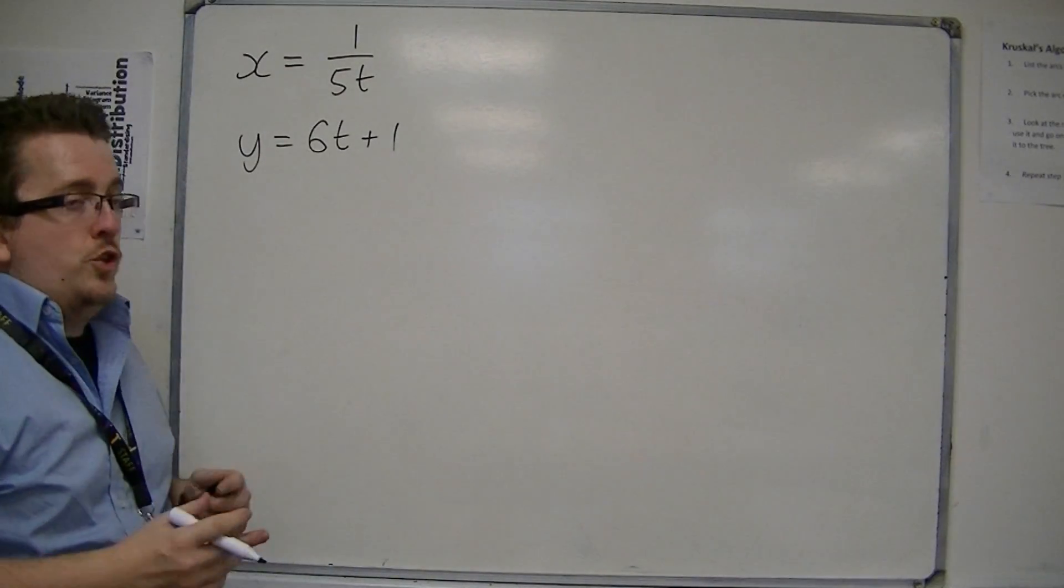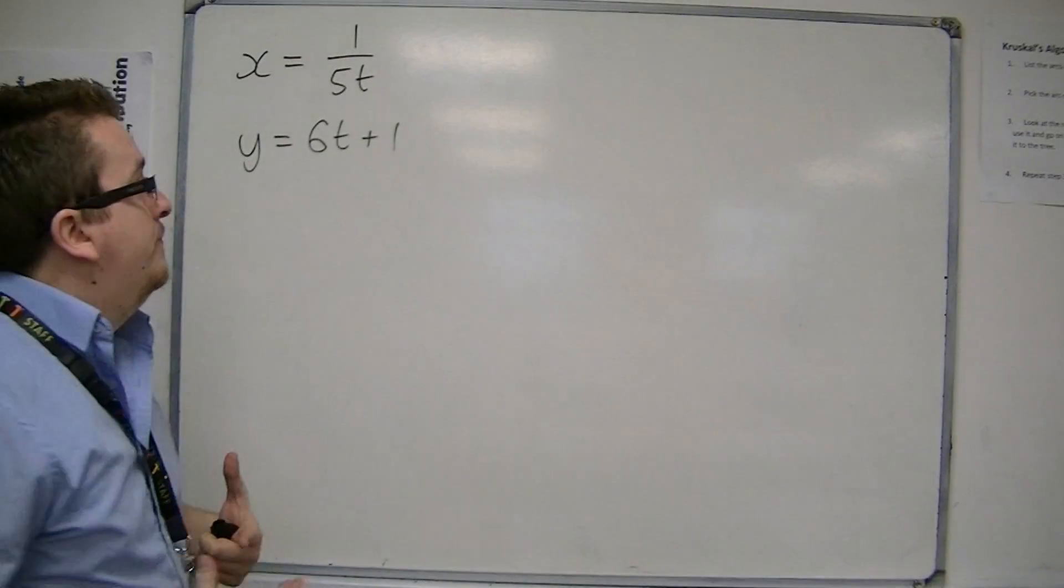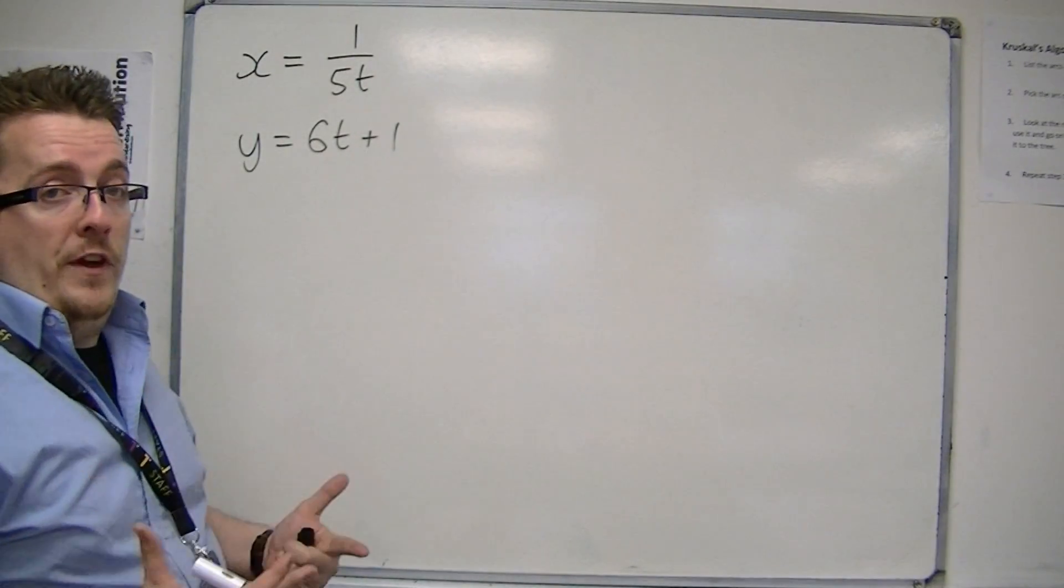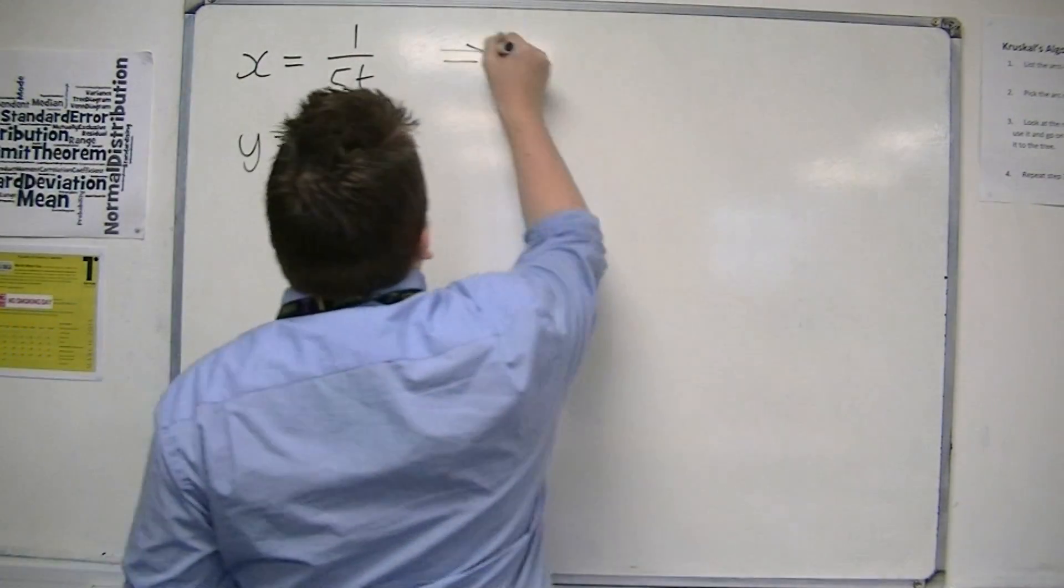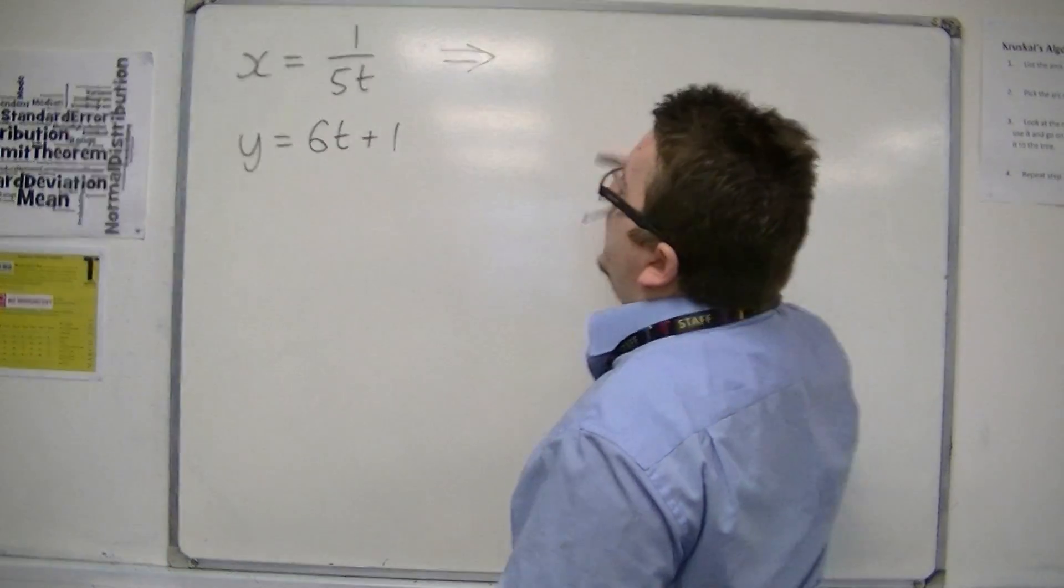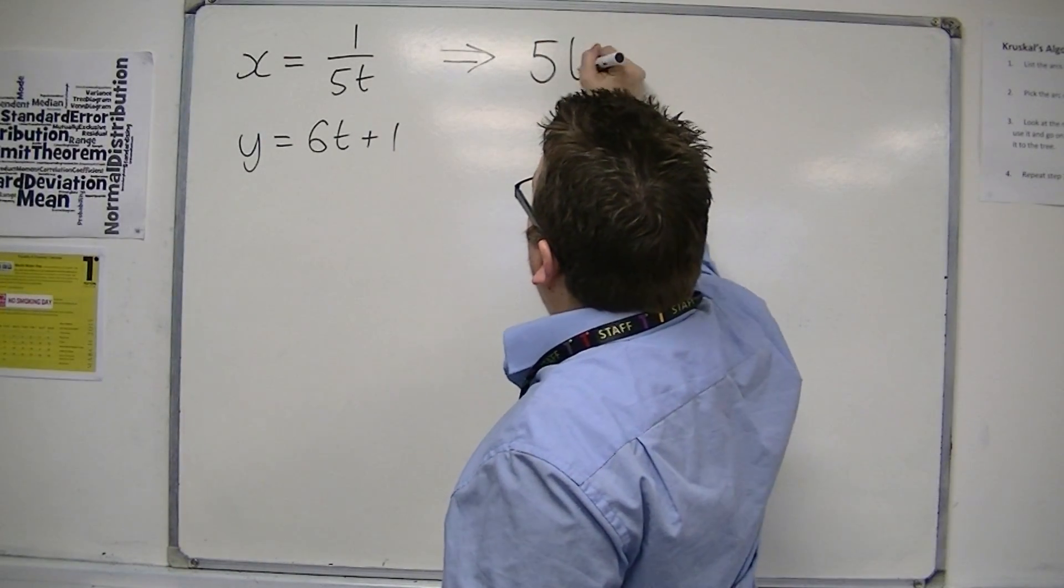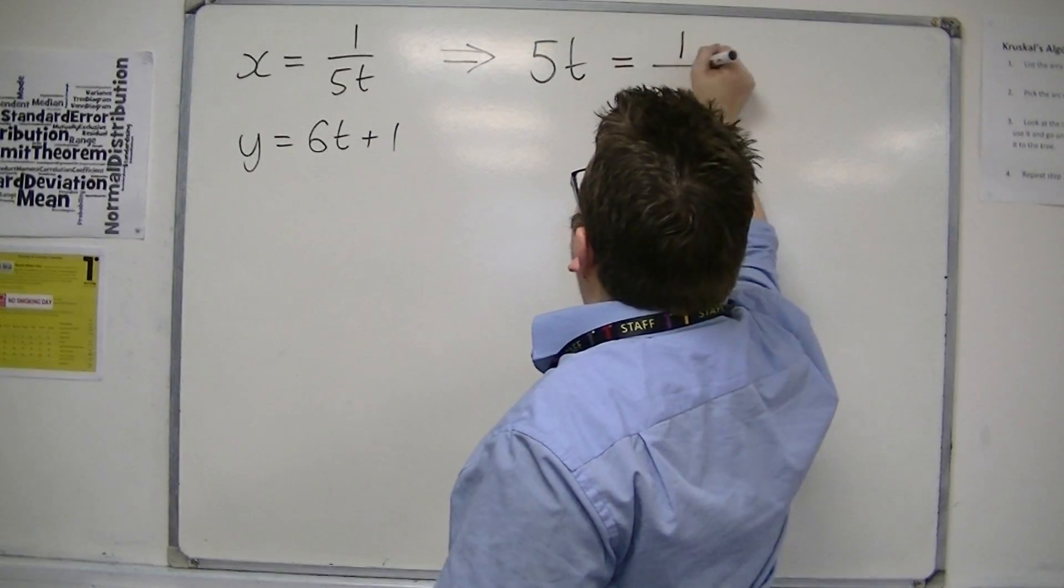So, it's really your choice of which one you rearrange. I'm going to rearrange the first one. So, if I rearrange the first one, I can multiply both sides by 5t, and divide both sides by x.